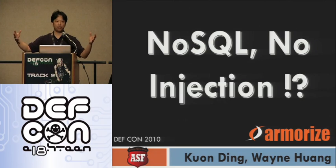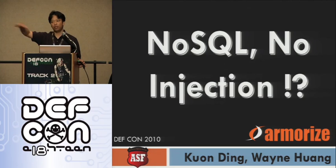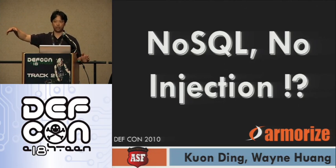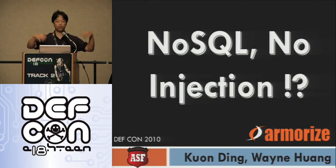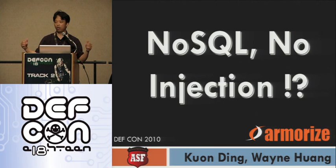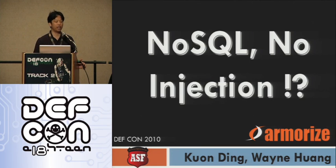Because the data was getting much too big for traditional relational databases to handle, the crawler team started to do this research. But this research would then actually benefit the code security team, because as we see more and more NoSQL code, we need to know how to scan for vulnerabilities inside that code. And this is how the talk came about.